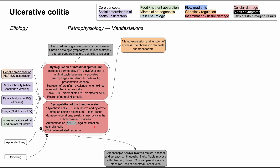Now let's talk about mechanisms that lead to signs and symptoms. In ulcerative colitis, there is altered expression and function of epithelial membrane ion channels and transporters, resulting in decreased water and ion absorption from the gut lumen. This leads to bloody diarrhea — if you're not absorbing water and ions, you lose them in stool, and because of the ulcerations, erosions, and necrosis, that diarrhea will be bloody.